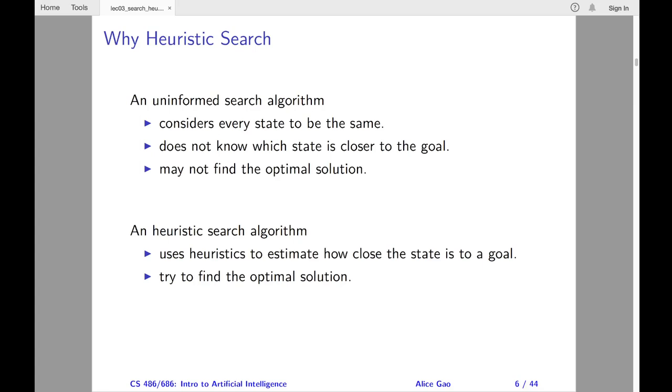Let's compare the uninformed and heuristic search algorithms at a high level. An uninformed search algorithm does not actively reason about the goal states. Every state appears equivalent to the algorithm. The algorithm is not guaranteed to find the optimal solution, because it does not consider the cost of the edges.